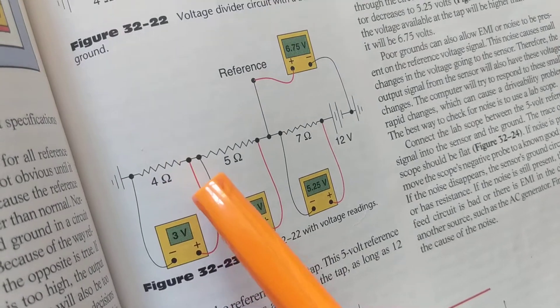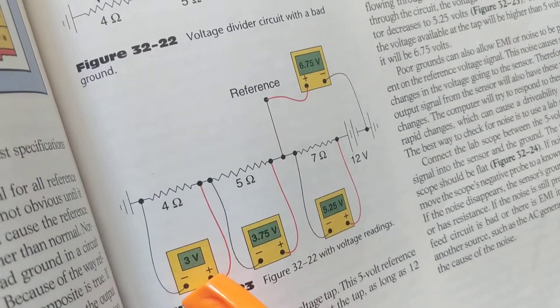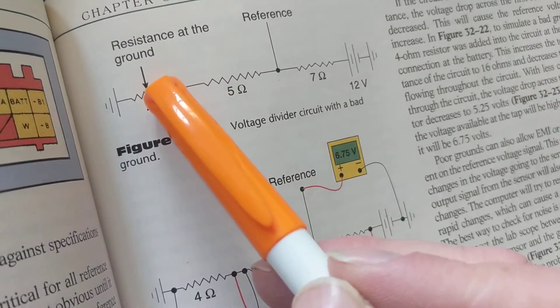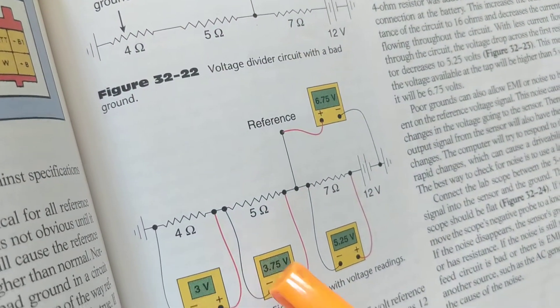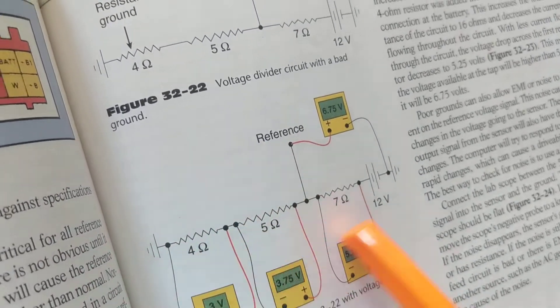So now we have a voltage drop. Now we have problems. We have 3 volts from here to here. We should have 0 volts from here. This gave us 3 volts. That screwed up the whole thing.